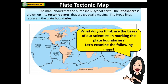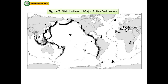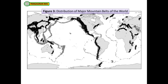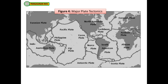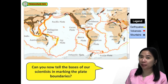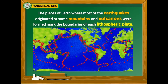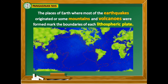What do you think are the bases of our scientists in marking the plate boundaries? Let's examine the following maps. Figure 1 shows the distribution of major earthquakes or epicenters. Figure 2 shows the distribution of major active volcanoes. Figure 3 shows the distribution of major mountain belts of the world. And Figure 4 shows the major plate tectonics. Now let's put all the maps together — do you notice anything? The places where most earthquakes originated or where mountains and volcanoes were formed mark the boundaries of each lithospheric plate.